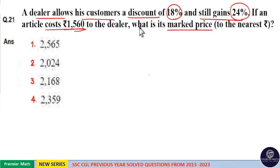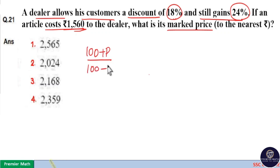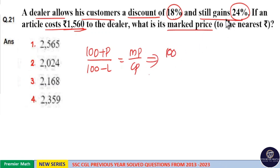Here, you can solve this using the ratio method, but you already know: (100 + profit) divided by (100 minus loss) equals marked price by cost price. Now, this equals 100 plus profit, which is a gain of 24%. So, 100 plus 24 equals 124 rupees.